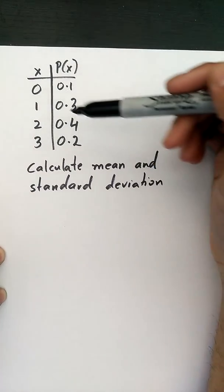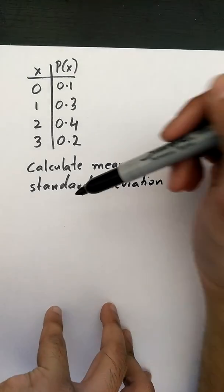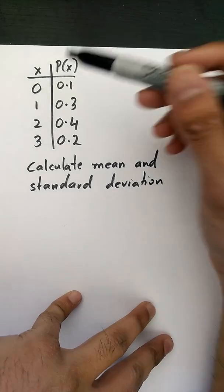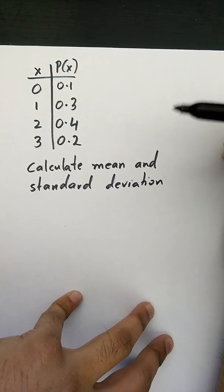Okay, so in this question we're given a probability distribution and we're asked to find the mean and the standard deviation. We'll use a table method to do this problem.